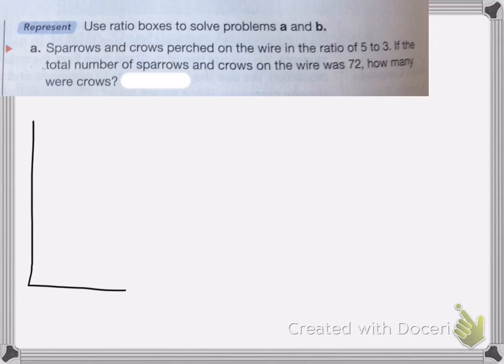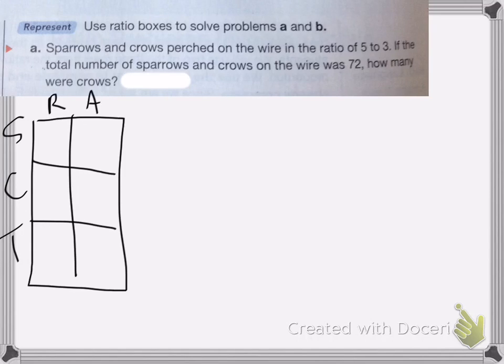Again, I'm going to draw my ratio box with 3 rows. We're going to have sparrows, crows, and total. The top is my ratio in the actual count. So the sparrows is 5 to 3. And then there's a total of 72 birds.